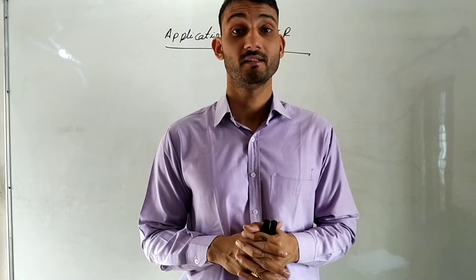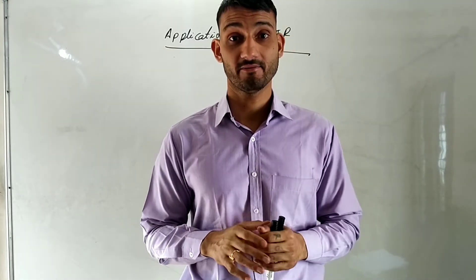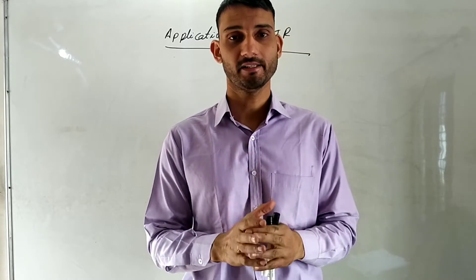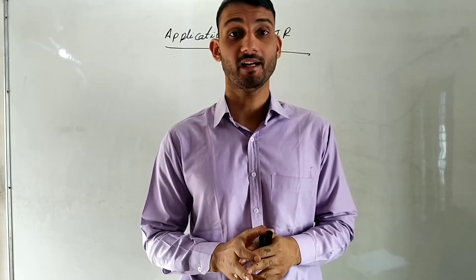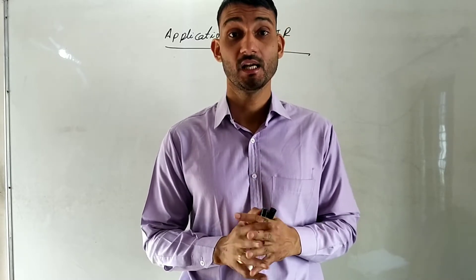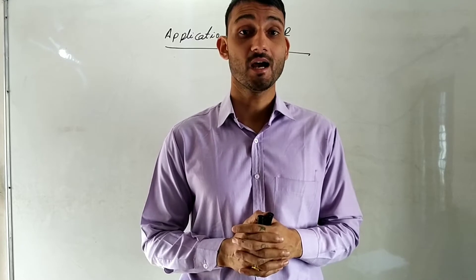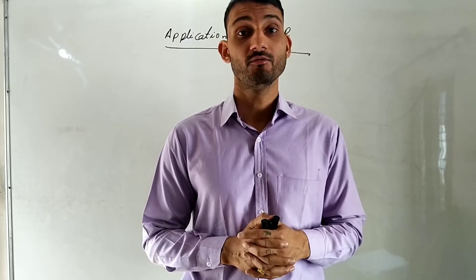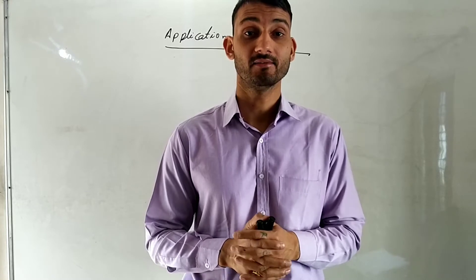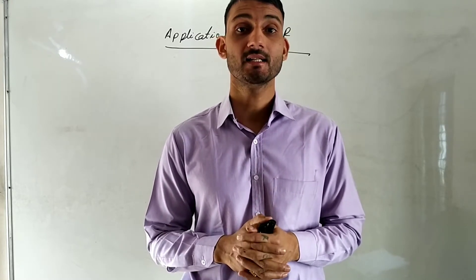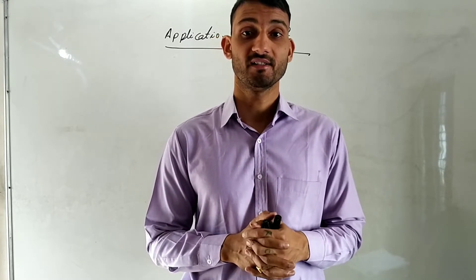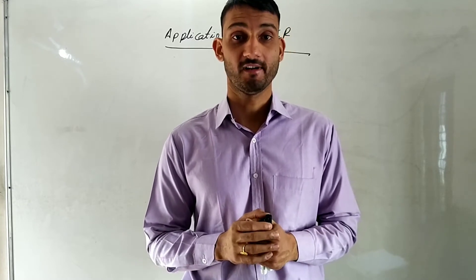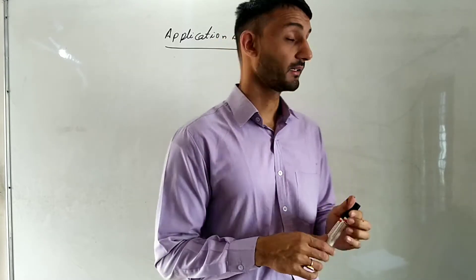Hi, welcome to the class. In this class we'll discuss applications of TIR, we'll discuss a relation between refractive index and the critical angle, and also we'll understand how light deviates through a prism with an angle of 90 degrees as well as 180 degrees, and at last we'll understand the difference between TIR and reflection of light. So let us start.